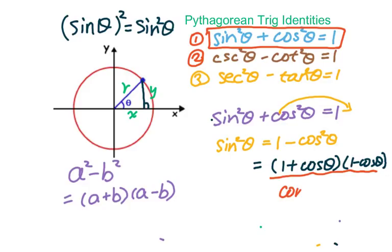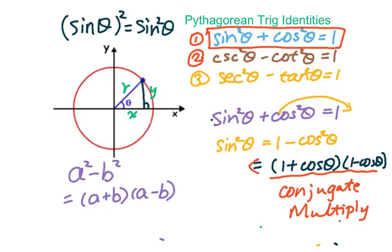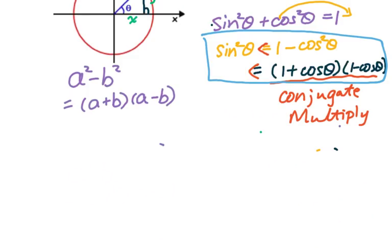We call this a conjugate multiply. It's a very important property. So working backwards, when you see (1 + cos θ)(1 − cos θ), you get 1 minus cos squared θ, which equals sin squared θ. You need to remember this. This is the first twisted form of the Pythagorean trig identity.